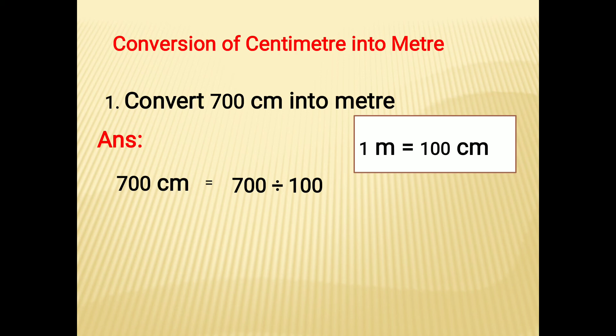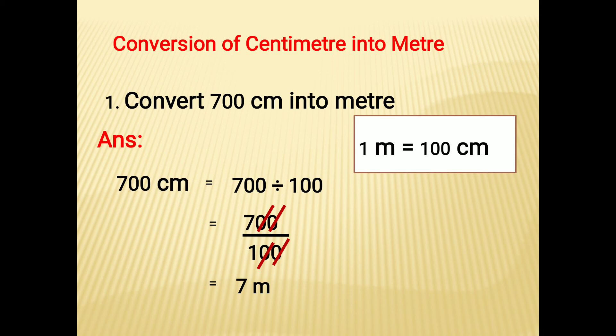700 divided by 100. Cancel the zeros — the first zero and the second zero cancel out. So 7 divided by 1 is nothing but 7 meters. Therefore the answer is 7 meters.